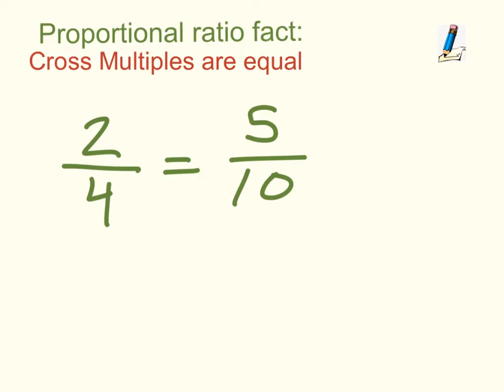First off, we have to remember a proportional ratio fact. Jot this down in your notes: the proportional ratio fact is that cross multiples are equal to each other. Here's an equal ratio: we know both are equal to one-half, so it's fair to say that 2/4 equals 5/10.